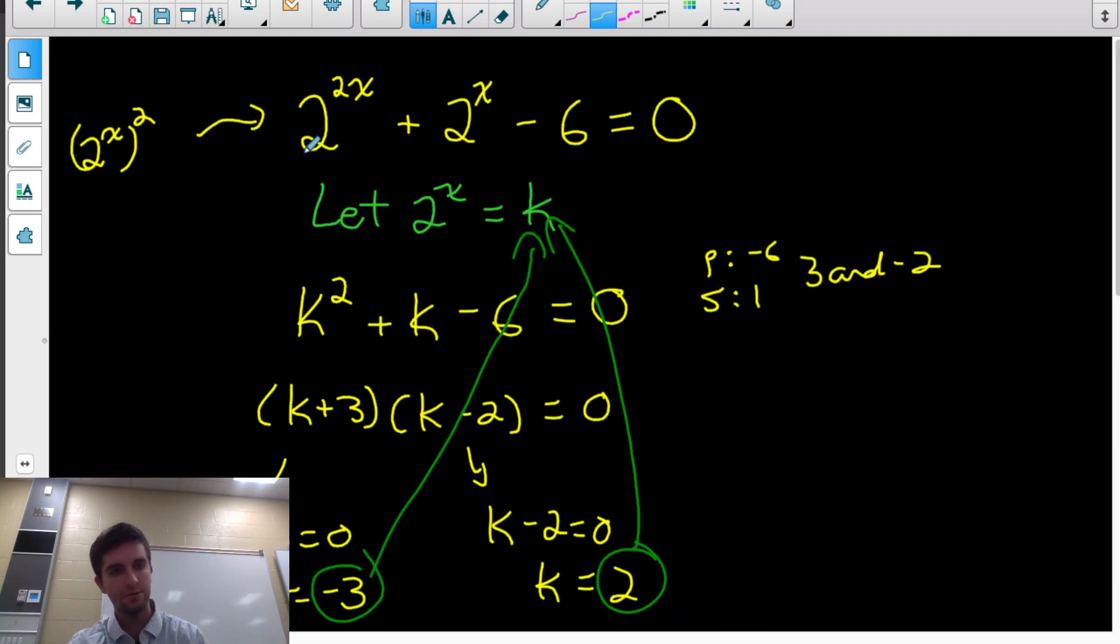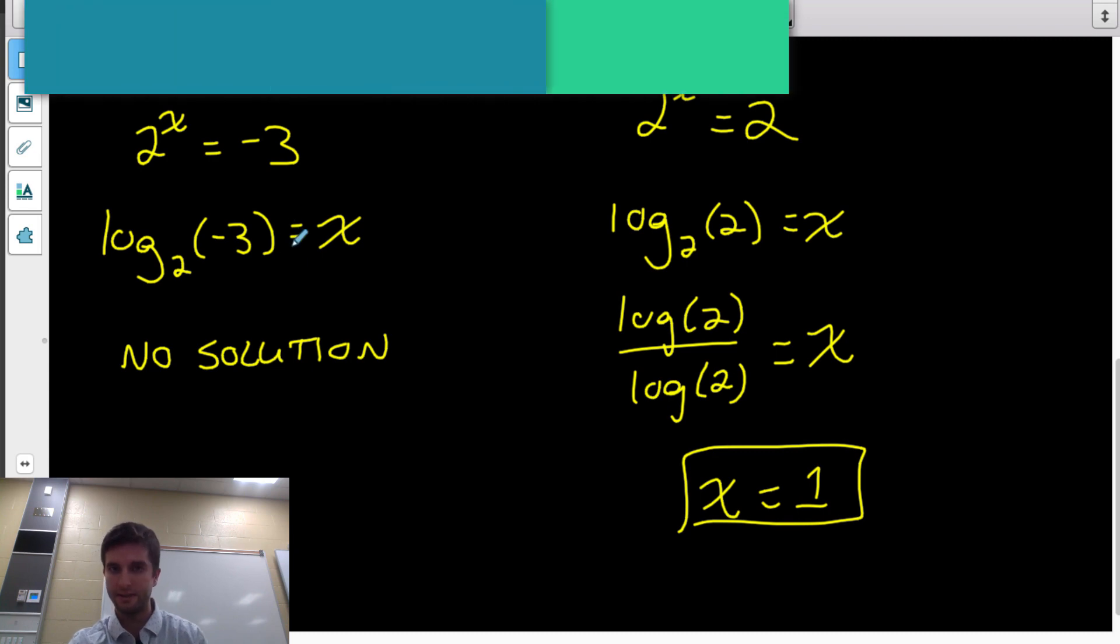2 to the 2 times 1 is 2, plus, sorry, 2 to the 2 times 1 is 2 squared, which is 4, sorry. So we'd have 4 plus 2 to the 1, which is 2 minus 6 equals 0, right? 4 plus 2 minus 6, that's 6 minus 6, that's 0. So our answer of 1 is the correct answer.